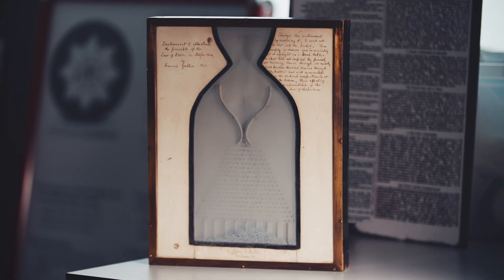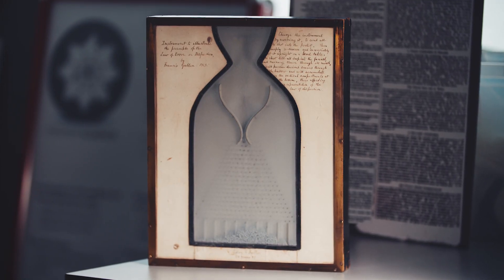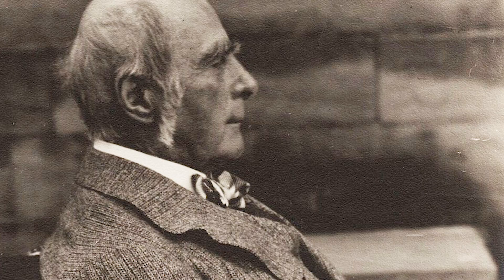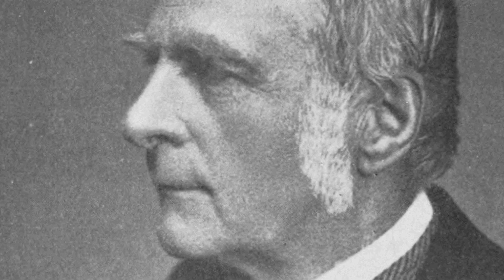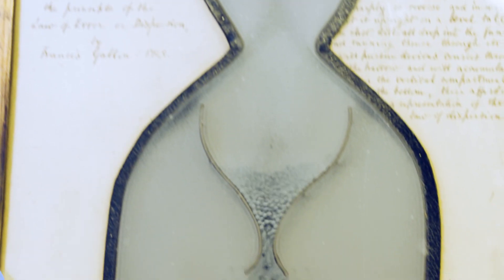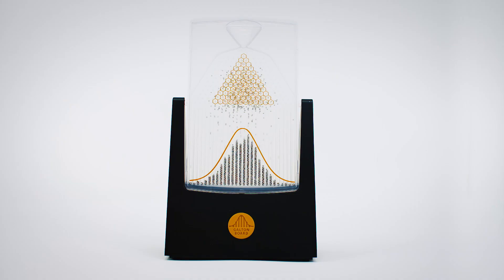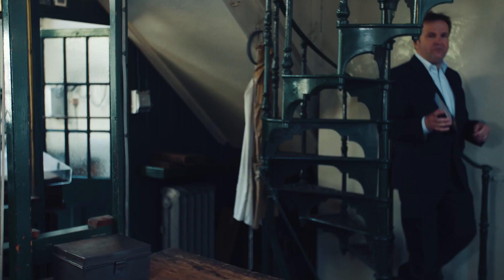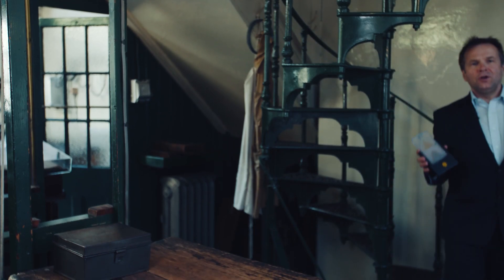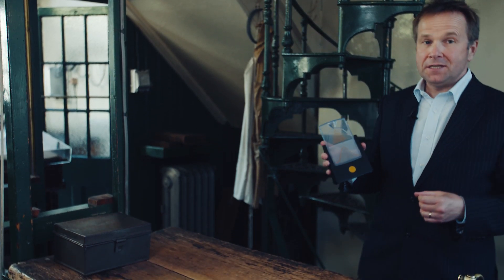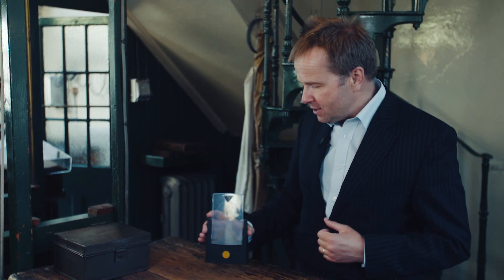The Galton Board, invented in 1876 by the Victorian genius Sir Francis Galton, presents an elegant demonstration of how a normal distribution arises from the combination of a large number of random events. It provided Galton with key insights into the distribution of human characteristics during his studies on heredity.